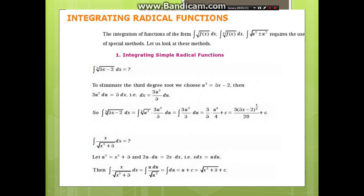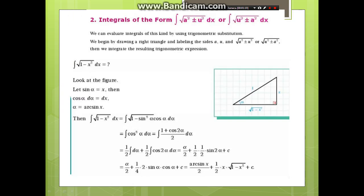For integrals of the form ∫√(a² - x²) dx, we can evaluate them by using trigonometric substitution. We begin by drawing a right triangle and labeling the sides. Look at the figure. Let sin θ = x, then cos θ dθ = dx. The substitution uses the inverse sine function. Integrating the resulting trigonometric expression gives the answer.